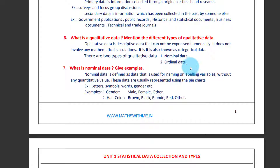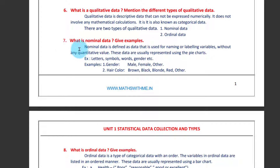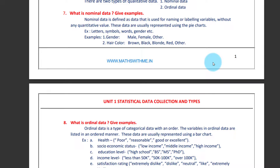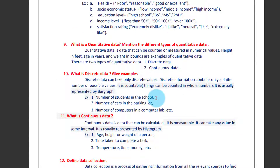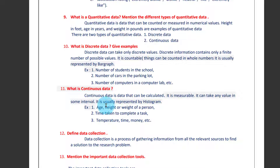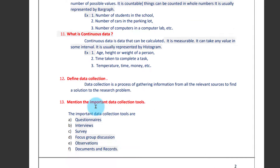It includes two types: one is nominal data, and the other one is ordinal data. Nominal data is defined as data that is used for naming or labeling variables. Data collection is the process of gathering information from all the relevant resources to find the solution to the research problem.